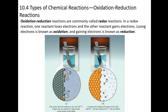In a redox reaction, you actually gain and lose electrons. In the double replacement, there is no gain or loss of electrons — however many electrons your ion has at the beginning, that's how much it has at the end. But in redox, you start losing and gaining electrons. Losing electrons is called oxidation, and gaining electrons is called reduction.